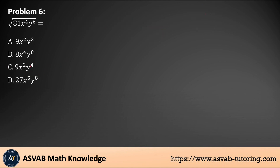Problem number six: find the square root of 81x⁴y⁶. This looks hard but is very simple. Break it down step by step: square root of 81 is 9; square root of x⁴ is x squared; and for y⁶, you can write it as (y³)², so the square root cancels the square, giving y cubed. The final answer is 9x²y³, option A.